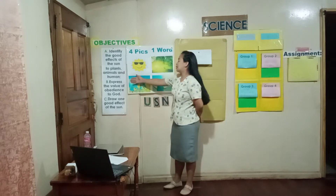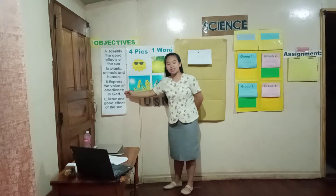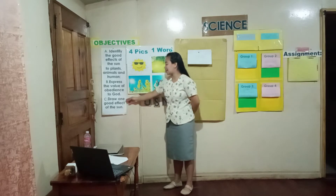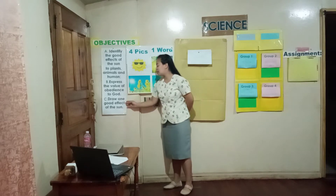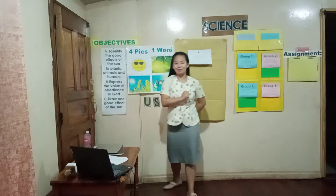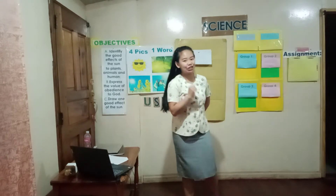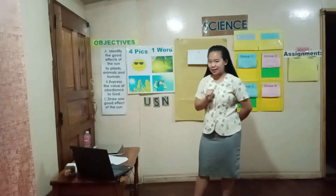Letter B: express the value of obedience to God. And letter C: draw one good effect of the sun. I know you're excited to play this game, kids.